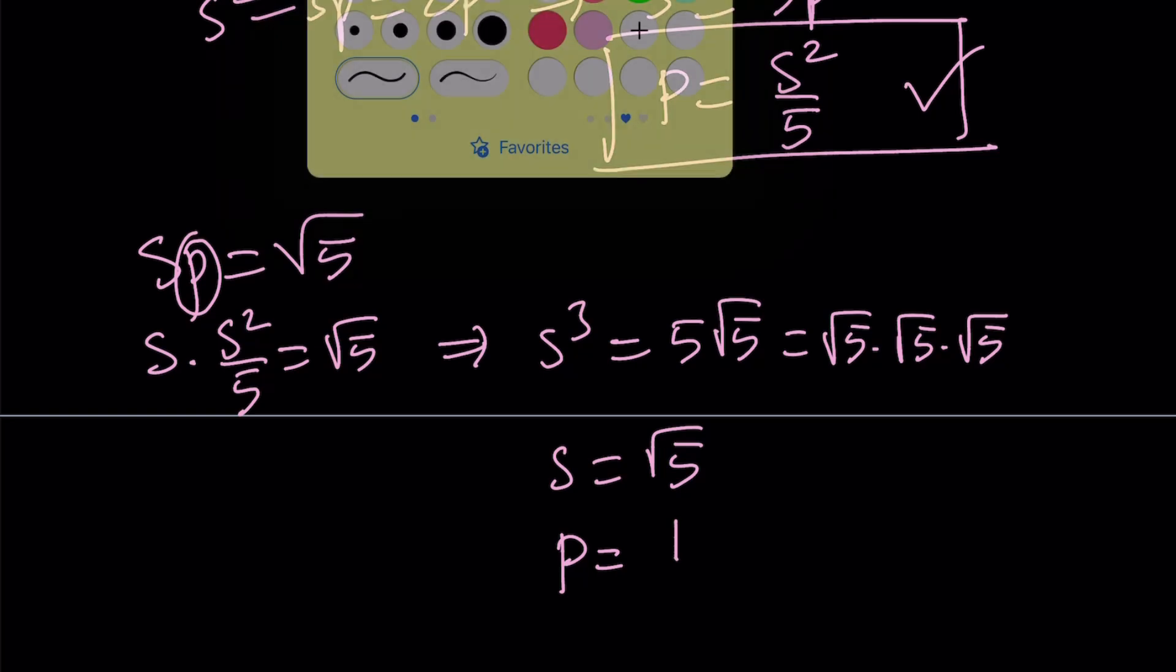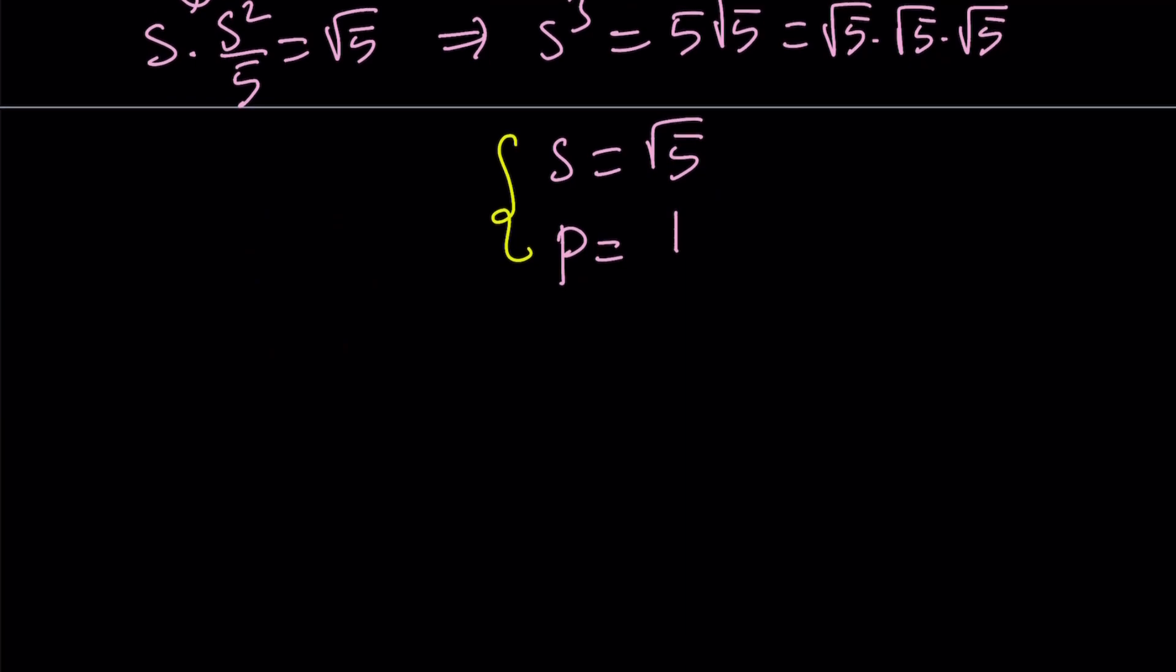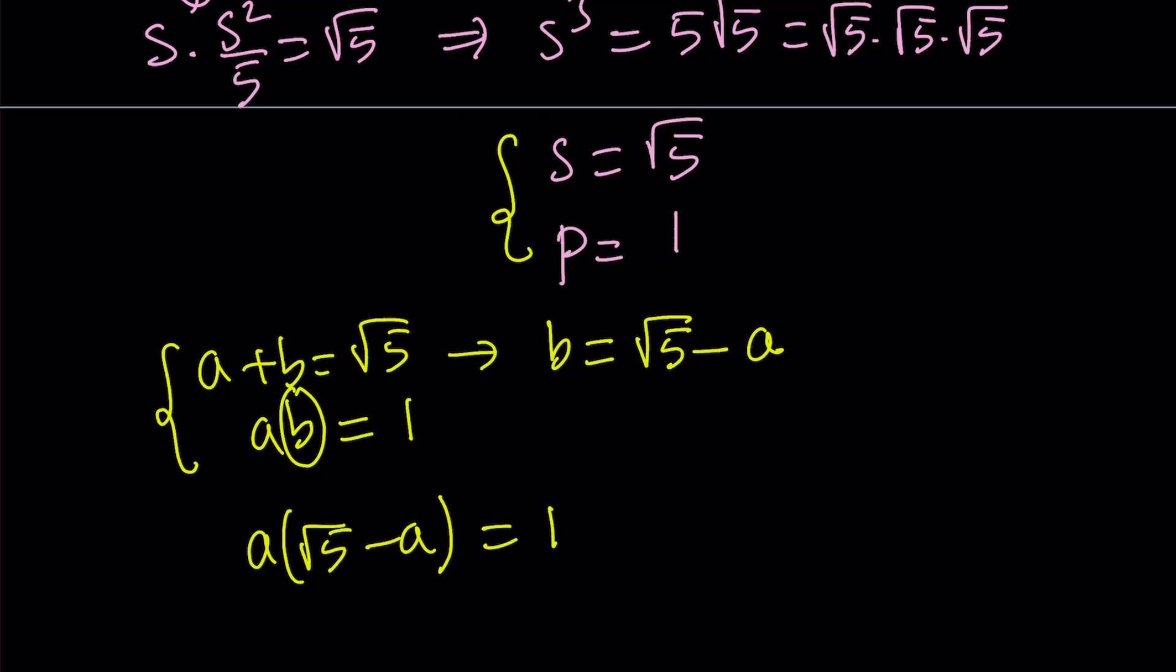Right now, we do have another system. You can go ahead and write a+b for s and ab for p, and come up with a system like this. And then try to solve the system. How do you solve the system? I can use substitution. Isolate b. It becomes √5 - a. And then here in the second equation, if I replace b with √5 - a, then I do get a quadratic equation.